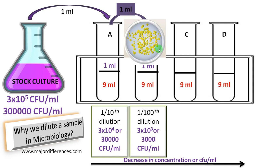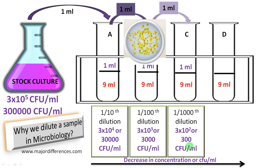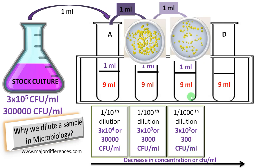So we are further diluting. From test tube B we transfer 1 ml to test tube C. Now we have a 1/1000 dilution — a thousand times diluted compared to the stock culture — that becomes 300 CFU per ml. So we get a countable number of colonies.